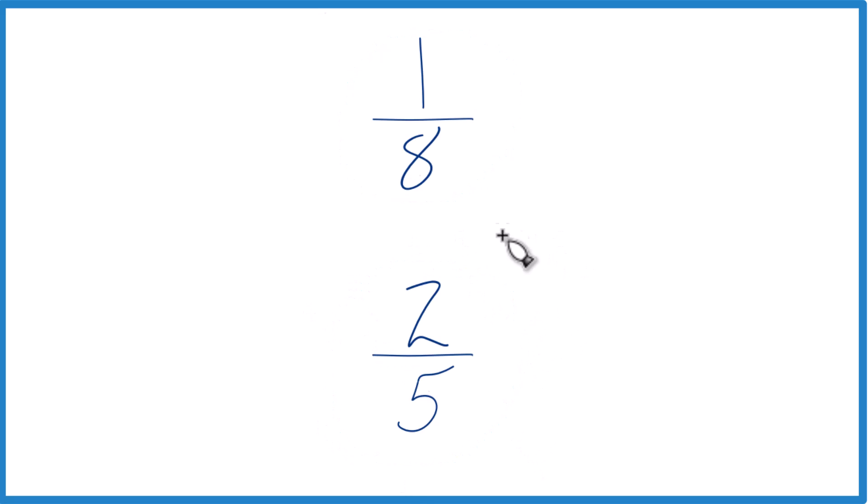First off, you could just divide 1 by 8 on a calculator, get a decimal, then divide 2 by 5, get a decimal, and compare the decimals. That would tell you if 1/8th is greater than, less than, or equal to 2/5ths.